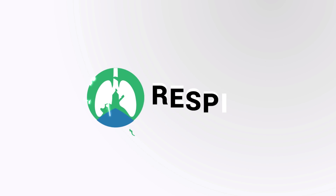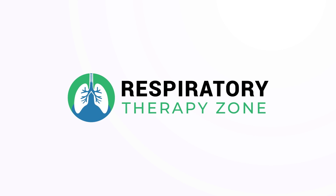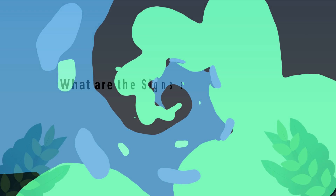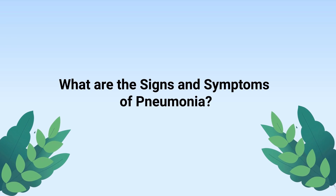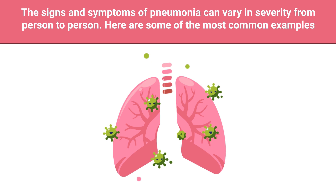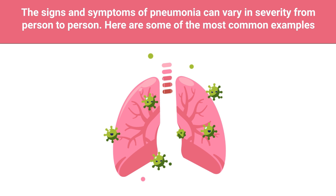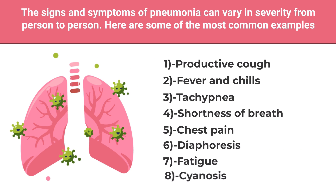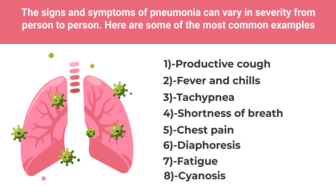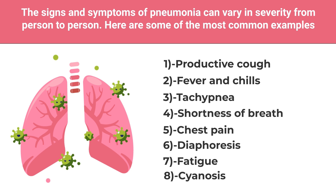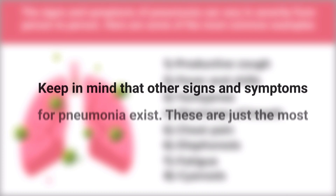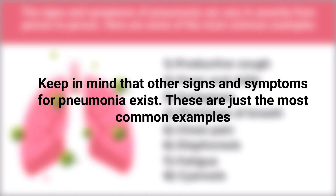The signs and symptoms of pneumonia can vary in severity from person to person. Some of the most common examples include productive cough, fever and chills, tachypnea, shortness of breath, chest pain, diaphoresis, fatigue, and cyanosis. Keep in mind that there are other signs and symptoms — these are just some of the most common examples.